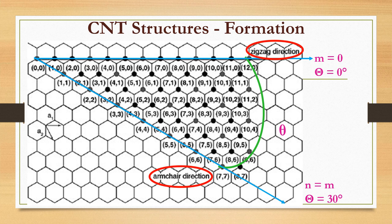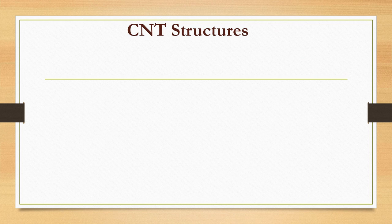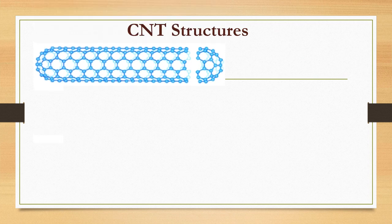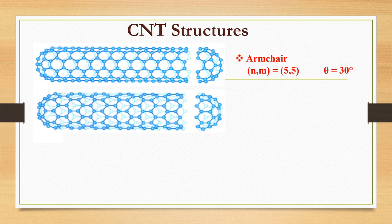The value of M and N determines the chirality and affects the optical, mechanical and electronic properties. For typical diameters, all armchair single wall nanotubes and one third of zigzag nanotubes are metallic while the rest are semiconducting.